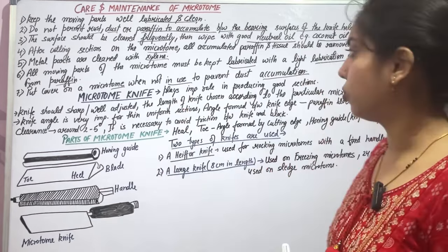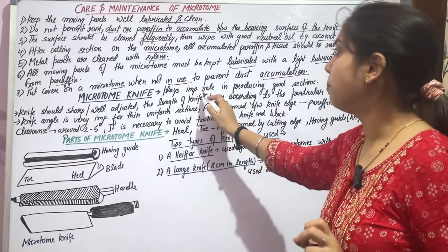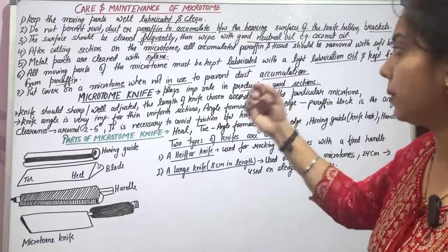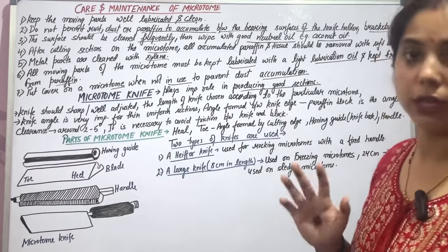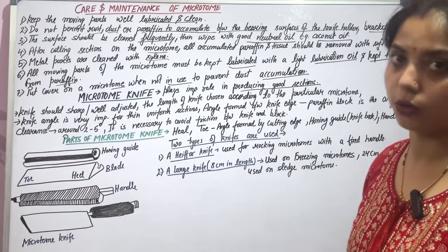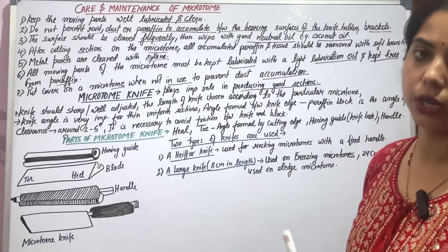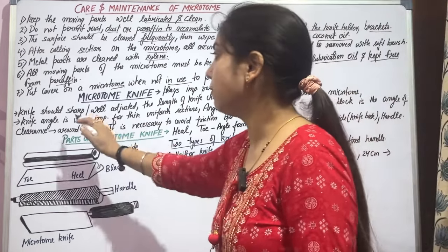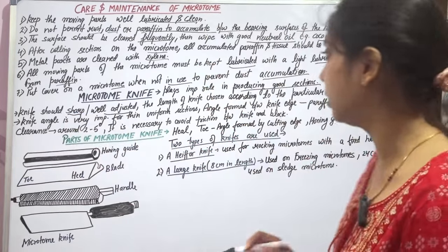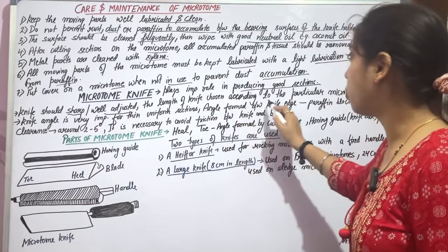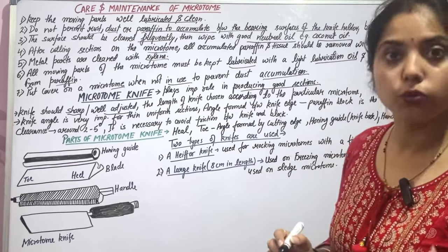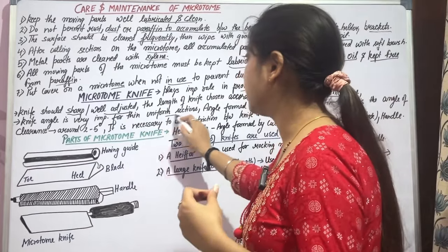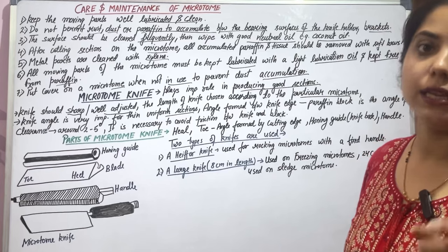The microtome knife plays an important role in producing good sections. If the microtome knife is good, serial sections will cut well. The knife should be sharp and well adjusted. The length of the knife is chosen according to the particular microtome being used. The knife angle is very important for producing thin, uniform sections.